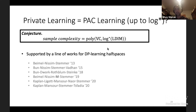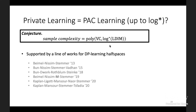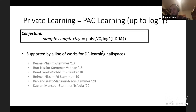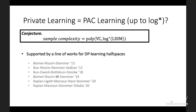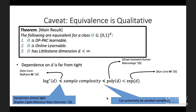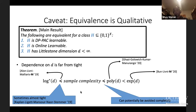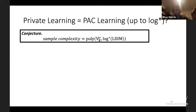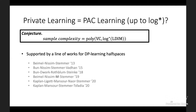One conjecture is that the sample complexity is really polynomial in the VC dimension plus log* of the Littlestone dimension. If true, the Littlestone dimension would have only a negligible effect on sample complexity. This is supported by a line of work on DP learning of half spaces, but remains wide open. We know the sample complexity is finite if and only if the Littlestone dimension is finite.